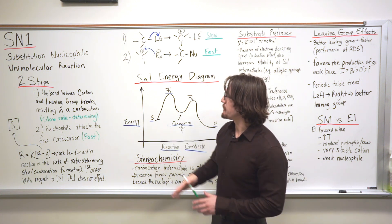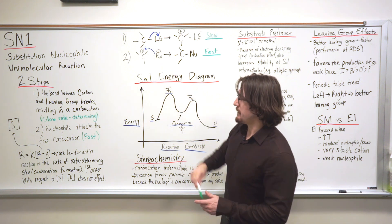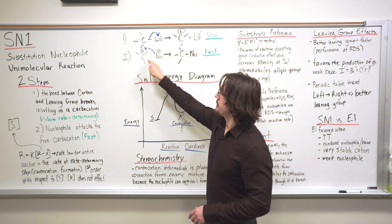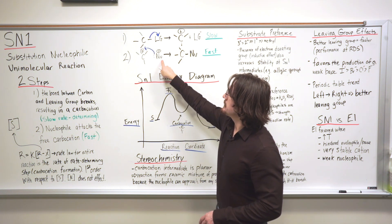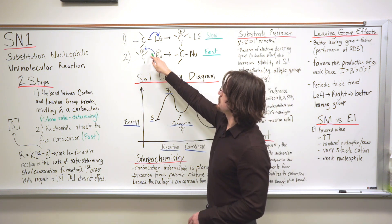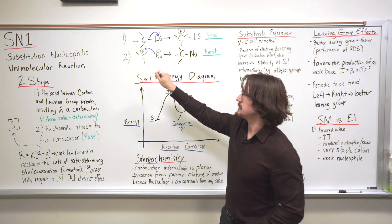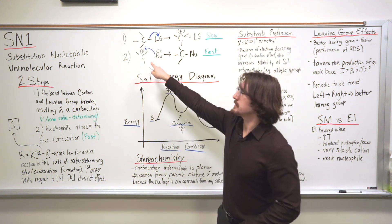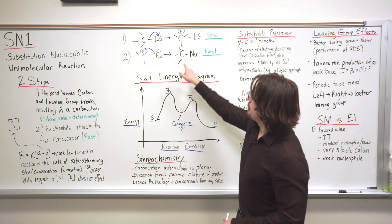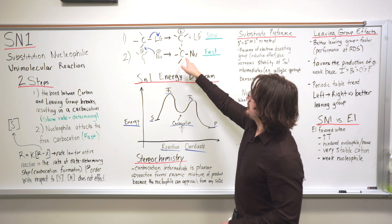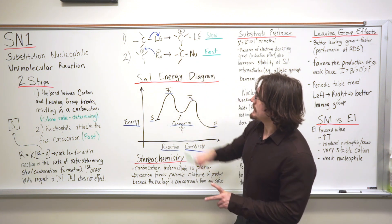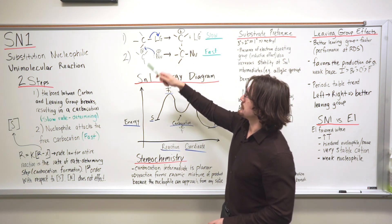The second step is the fast step, which is where the nucleophile will attack the positively charged carbon. The nucleophile is typically negatively charged — it doesn't necessarily need to be, but it'll have some lone pair of electrons that it can donate to this positively charged carbocation. That forms a new bond between the carbon and the nucleophile, creating this new molecule. This step occurs much faster than the first step.